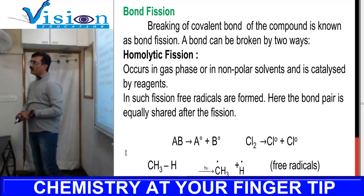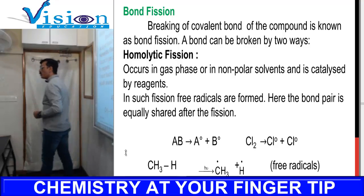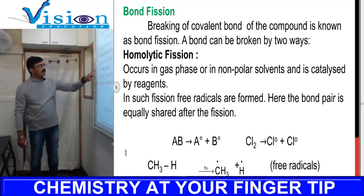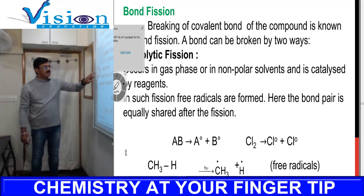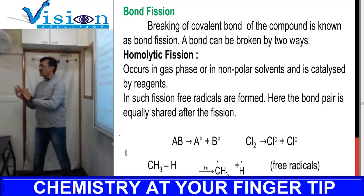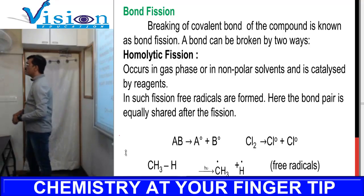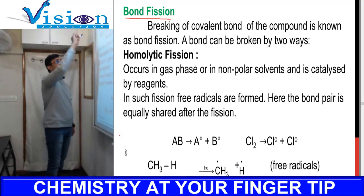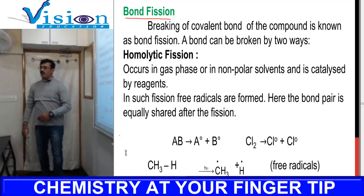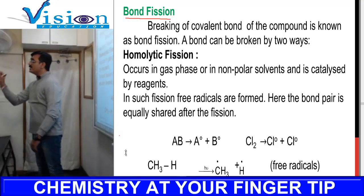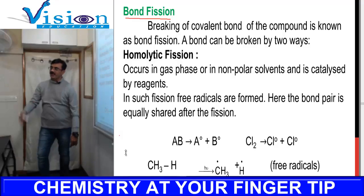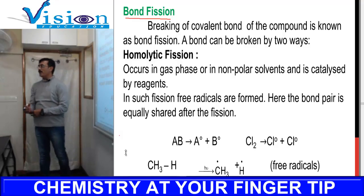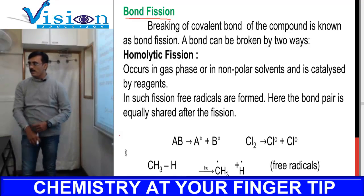Welcome back. We will continue further in our chapter — we are doing basic concepts of organic chemistry. This chapter is divided into parts: the first part is IUPAC nomenclature, the third part is isomerism, and now we are covering the basic theory which is very important for 12th standard. The first concept we'll learn is bond fission.